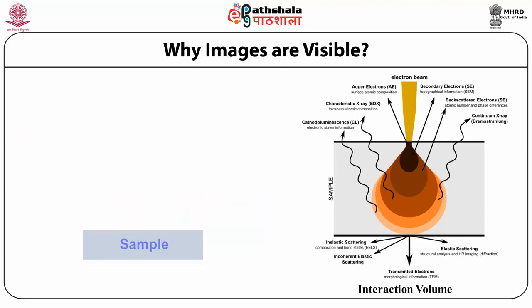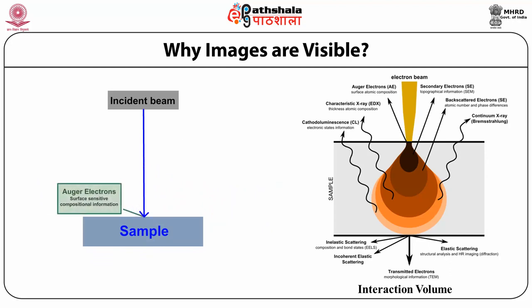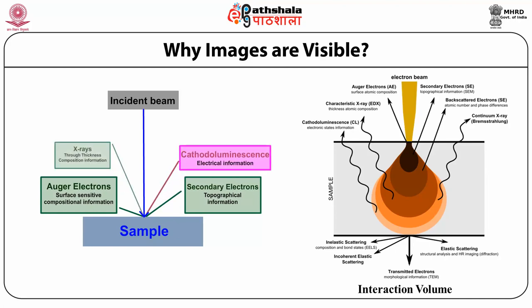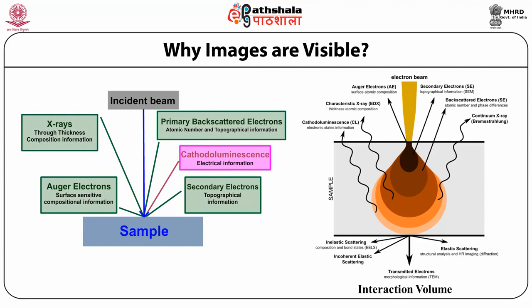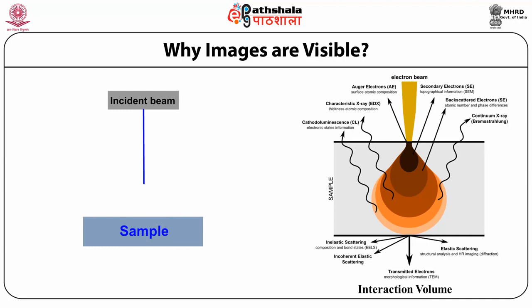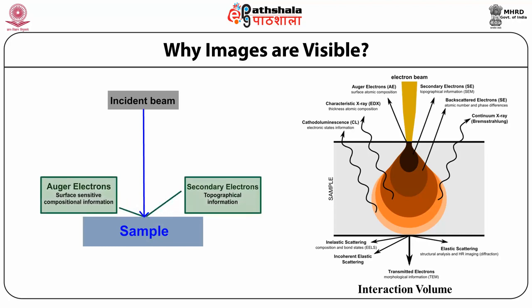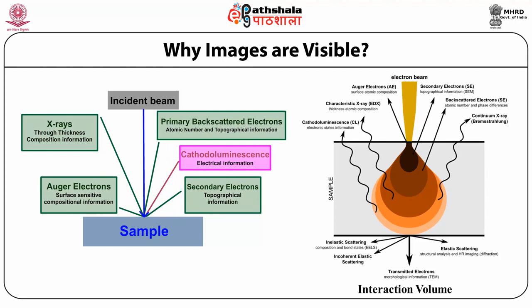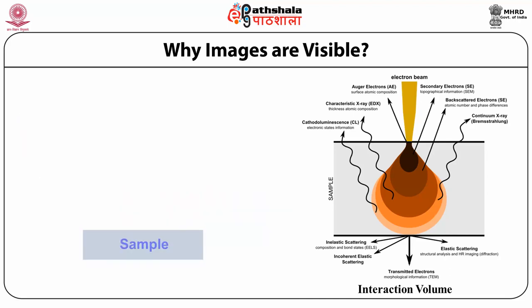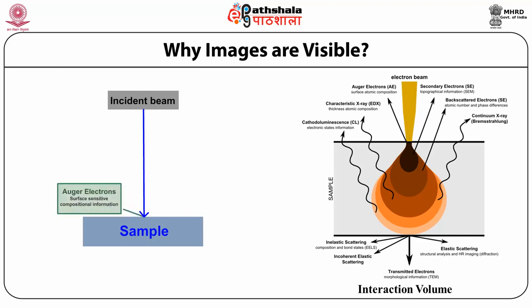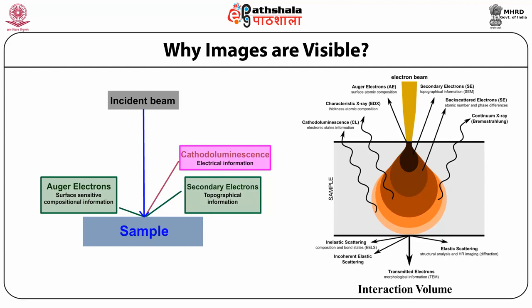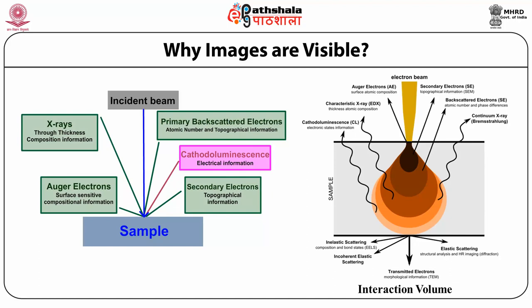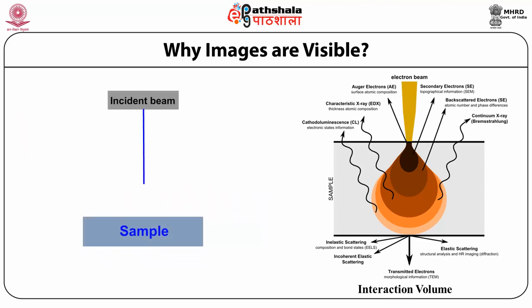When the primary electron beam interacts with the sample, the electrons lose energy by repeated random scattering and absorption within a teardrop-shaped volume of the specimen known as the interaction volume, which extends from less than 100 nanometers to approximately 5 micrometers into the surface. The size of the interaction volume depends on the electron landing energy, atomic number of the specimen, and specimen density. The energy exchange results in reflection of high-energy electrons by elastic scattering, emission of secondary electrons by inelastic scattering, and emission of electromagnetic radiation, each detected by specialized detectors.